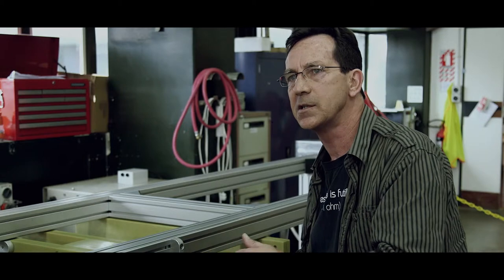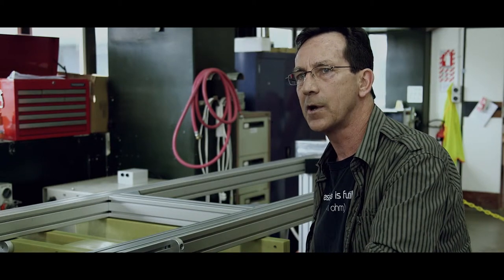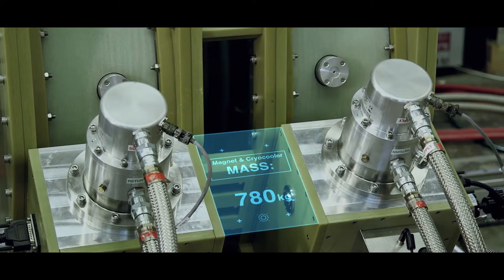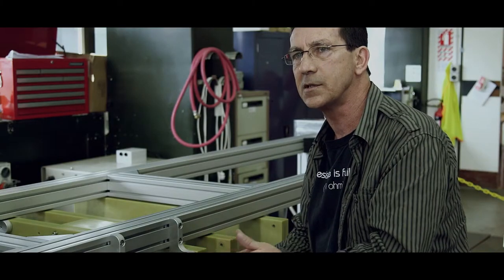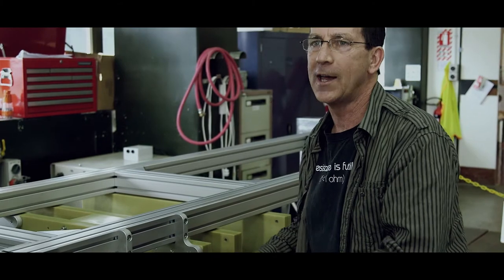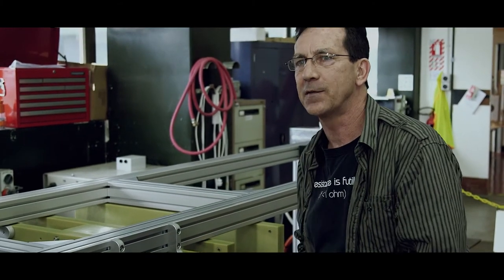In this five millimeter gap we install what's known as super insulation, so we have room temperature on the outside and on the inside five millimeters away we have minus 250 degrees Celsius. This is achieved by the high level of vacuum and by careful design and construction of the insulation.